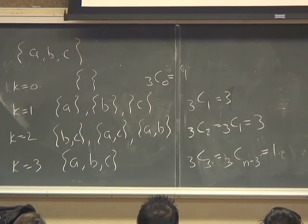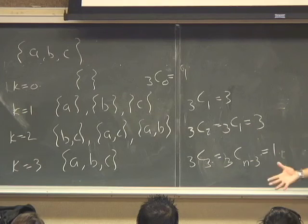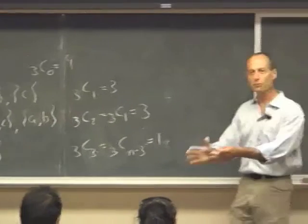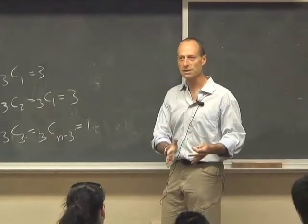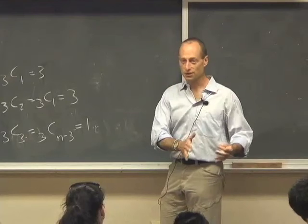That's all we're doing. We're dividing this collection of subsets into those subsets that have no members, those subsets that have 1, those subsets that have 2, and that subset that has 3.